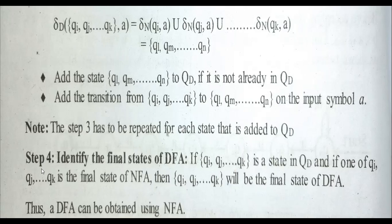Step four: identify the final states of DFA. If {qi, qj, qk} are states in QD, and if one of qi, qj, qk is the final state of NFA — say q2 is the final state of NFA — then in DFA, any set containing q2 as an element should be considered a final state.